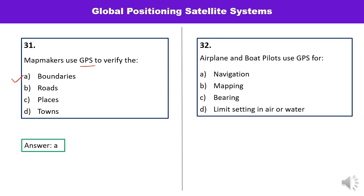Question number thirty-two: Airplane and boat pilots use GPS for what purpose — navigation, mapping, bearing, or limit setting in air or water? In both cases, the use of GPS is for navigation, so A is the correct answer.